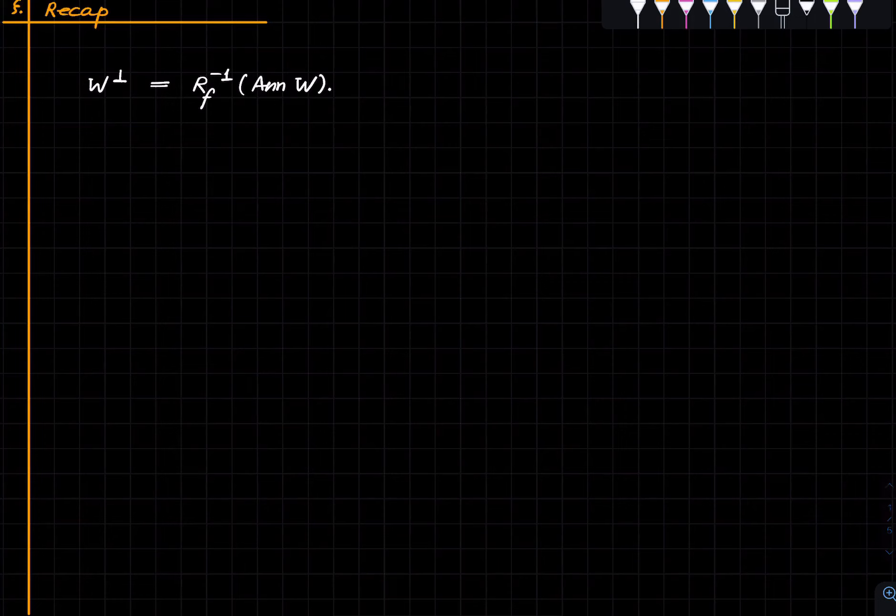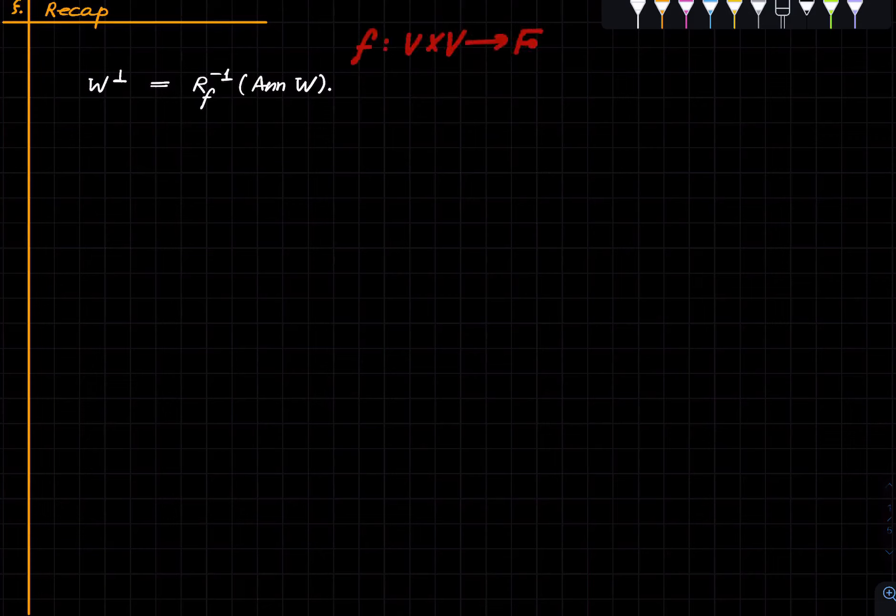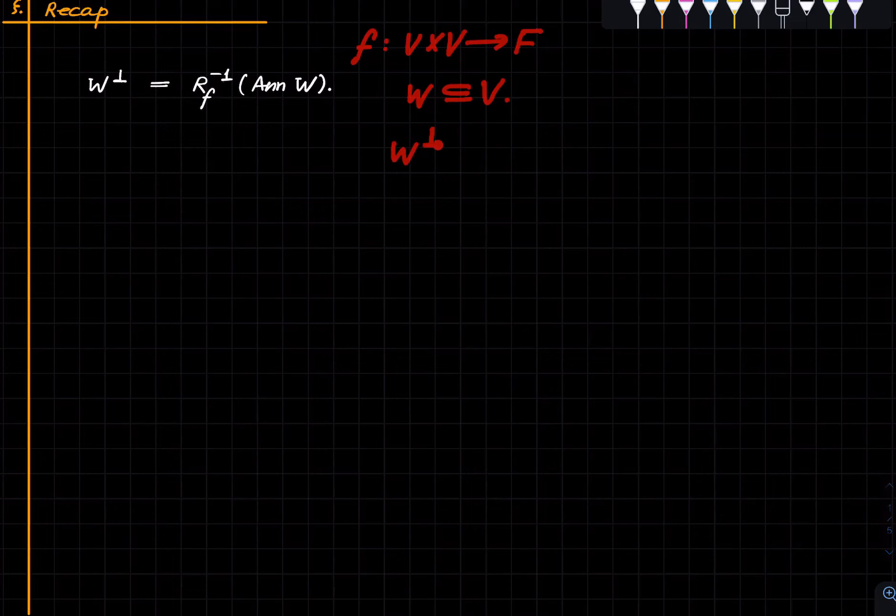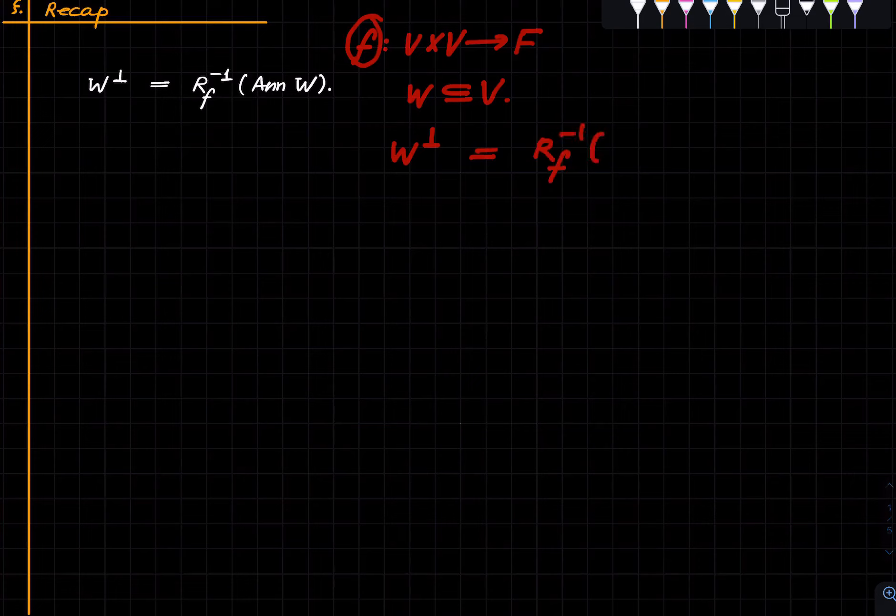There's only one theorem that we want to do and it's a very interesting theorem. All we need to know is the following. If F is a bilinear form on a vector space V and W is a subspace of V, then the orthogonal complement of W with respect to this bilinear form F is this thing I've written in white.